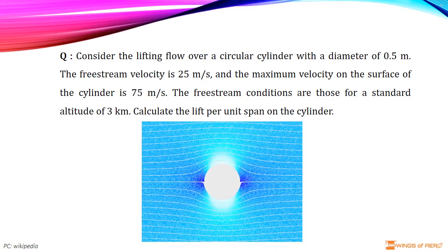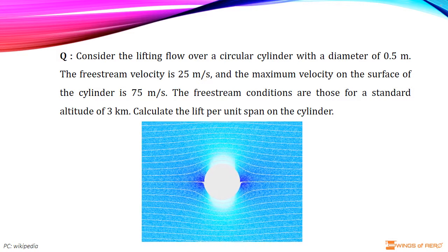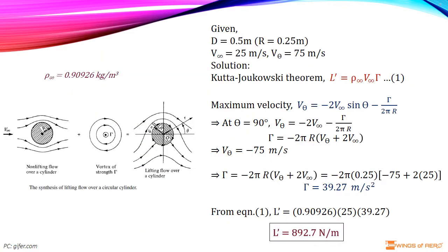Calculate the lift per unit span on the cylinder. Given data: the lifting flow over a circular cylinder has a diameter D of 0.5 meter and free stream velocity V infinity is 25 meter per second. And maximum velocity on the surface of the cylinder V_θ is 75 meter per second.